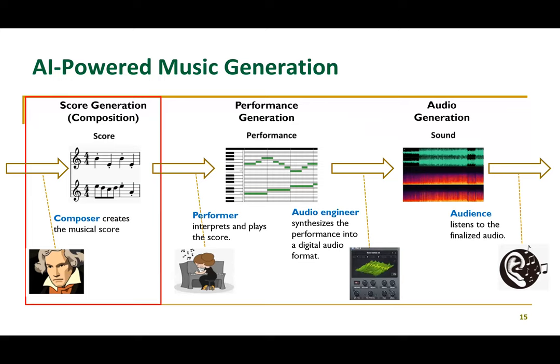For music generation, it can currently be classified into three categories: score generation, performance generation, and audio generation. For audio generation, it works well — there are many AI tools that can generate music and sounds. Performance generation is also an active research area achieving good results. Score generation — actually composing or writing music — is very challenging with few existing works. Our work focuses on this part: how to write music for anxiety reduction.